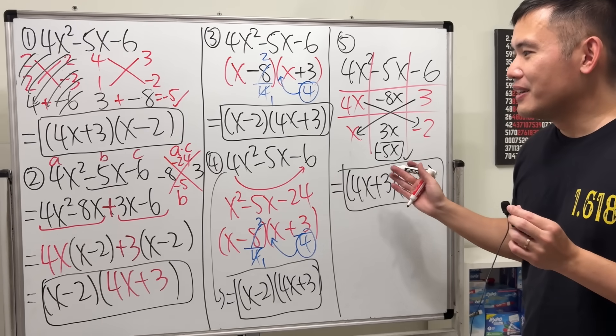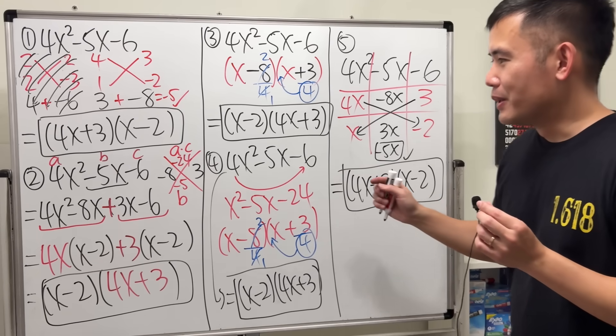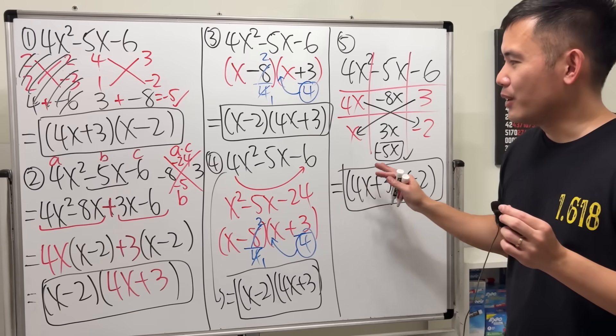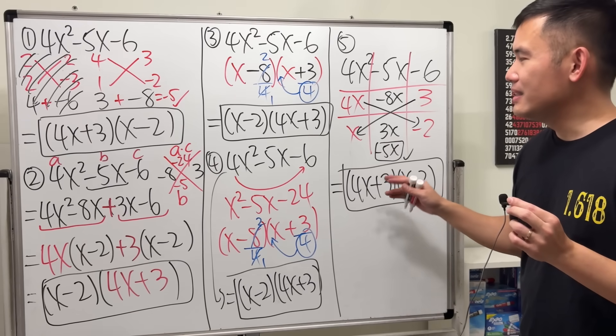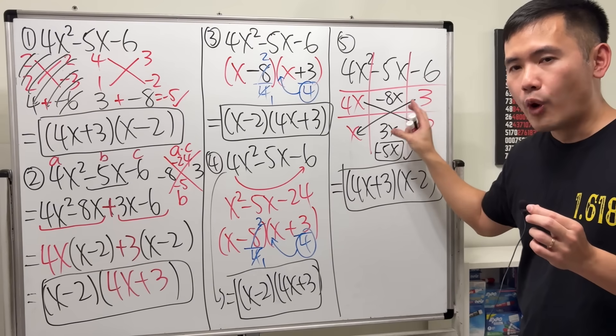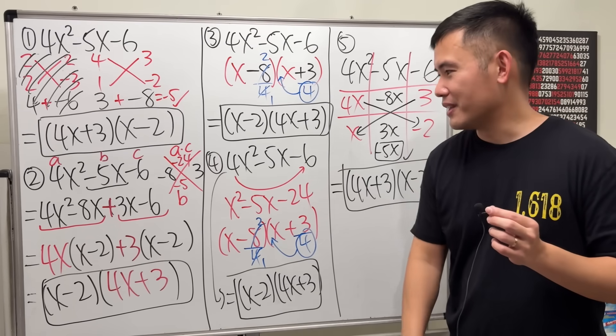I think this right here involves the least amount of remembering what to do at first. Right? The a times c and also get the b and all that. And this right here is very nice because you can see it's very very organized. Let me know what you think.